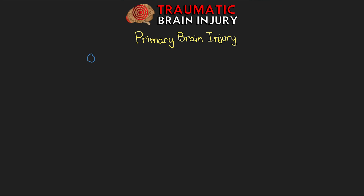Let's get into talking about our brain injuries, and specifically something we refer to as our primary brain injury. This is going to be a quick overview, as I'll have another lesson coming up covering this in much more depth. Our primary brain injury occurs at the time of the impact, and the result is either a focal, diffuse, or a combination of the two injuries. There are actually seven different types of primary brain injury.